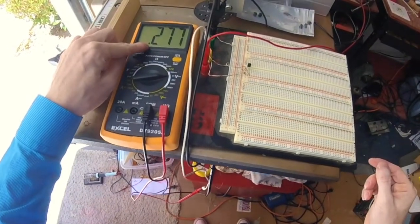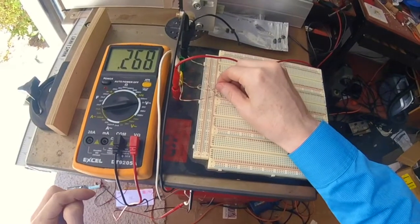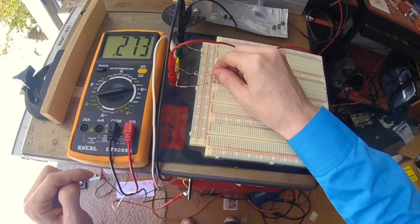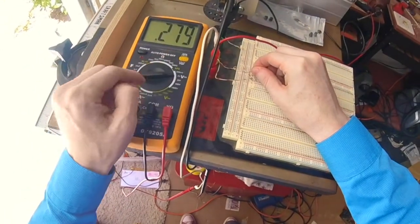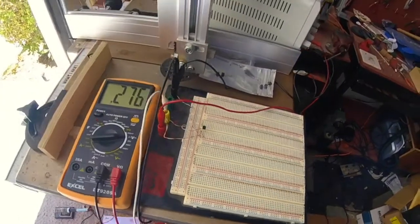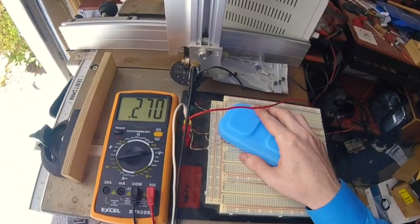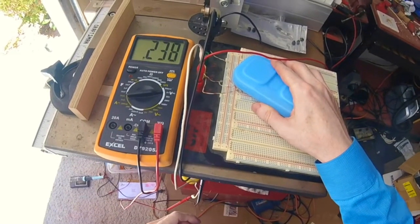We've got 0.27 volts. If I put my finger on it to warm it up, you can see that it's going up to 2.8 and if I put some ice on it, it shoots way down to 2.4 and so on.